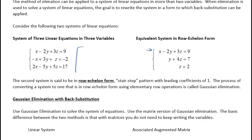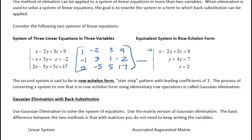They took the matrix — which was 1, negative 2, 3, 9 / negative 1, 3, negative 2, 2 / negative 5, 5, and 17 — and used row operations to get it to reduced form. Look how much simpler it became: ones along the diagonal and zeros in all the other positions.